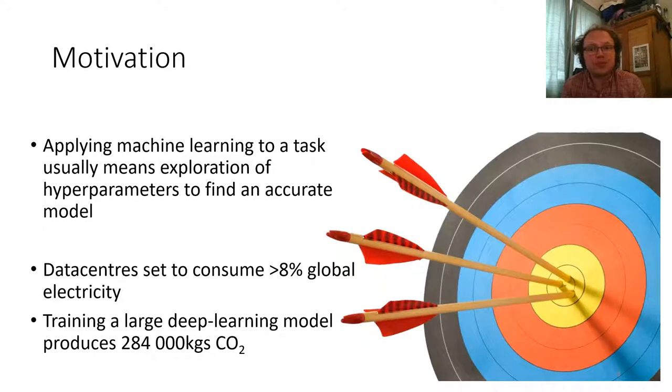But there are problems at the extremes of scale, right? And the actual training and the application of the model consume electricity. We know that data centers are big consumers of electricity. Training a large deep learning model produces a lot of CO2. And at the other end of the scale, on embedded devices, remote sensors, mobile devices, we're trying to minimize the energy footprint as much as possible to make use of the limited resources that are available.